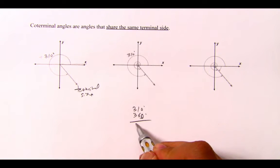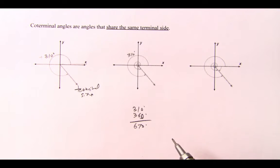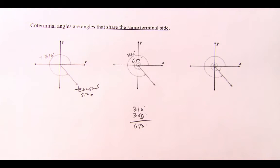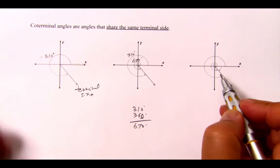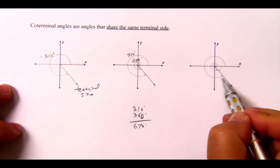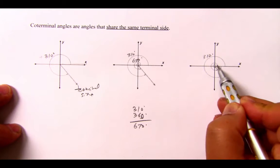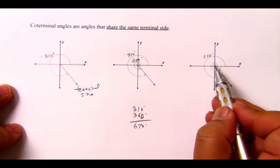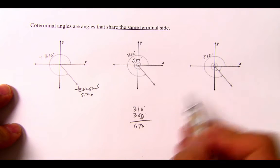So this measurement is 310 plus the full turn which is 360 degrees. And that adds up to 670 degrees. So that angle right here is 670 degrees. Now, once again, this one is 310. This one right here went around full turn plus 310 more.